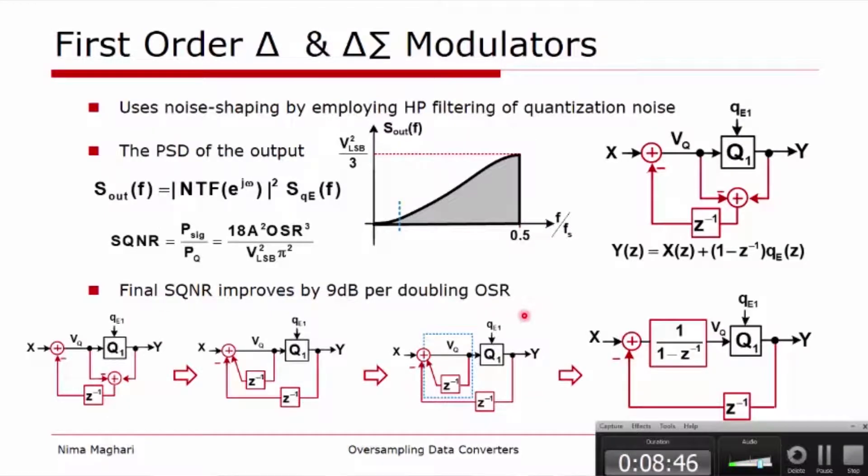Now how do we implement this structure? Basically all we need to do is to take the quantization error of any ADC, for instance a flash ADC, and feed it back and subtract it from the input signal with a delay. This gives us a first-order high-pass transfer function multiplied by the quantization error as shown here. And you can calculate the equations and mathematics for this, and you end up that your signal-to-noise ratio will improve by OSR cubed, OSR being oversampling ratio.